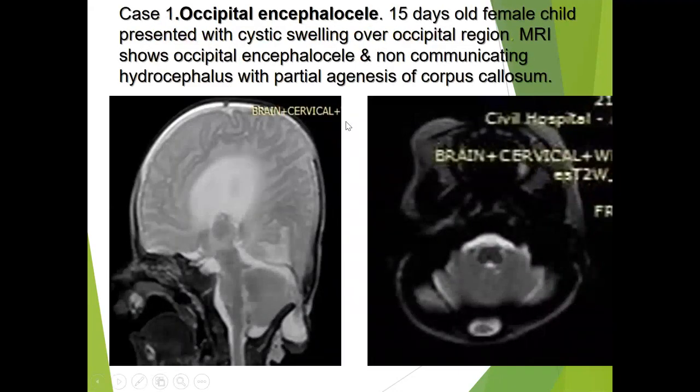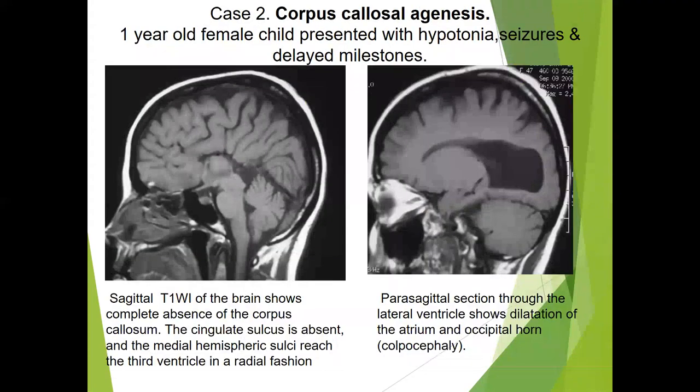The first case was of occipital encephalocele. A 15-day-old female child presented with cystic swelling over the occipital region. On T2-weighted MRI images, there is an occipital lesion consistent with encephalocele, and there was also non-communicating hydrocephalus with partial agenesis of the corpus callosum.